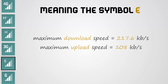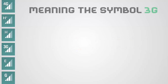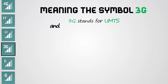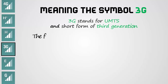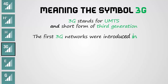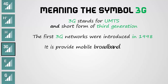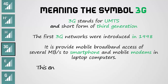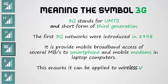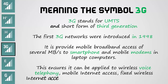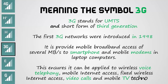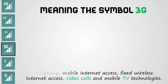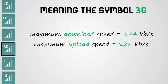Maximum upload speed equals 108 kbps. Meaning of the symbol 3G: 3G is short for third generation. The first 3G networks were introduced in 1998. It provides mobile broadband access of several megabytes per second to smartphones, mobile modems, and laptop computers. This ensures it can be applied to wireless voice telephony, mobile internet access, fixed wireless internet access, video calls, and mobile TV technologies. Maximum download speed equals 384 kbps. Maximum upload speed equals 128 kbps.